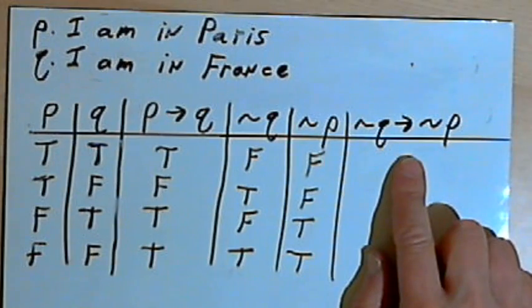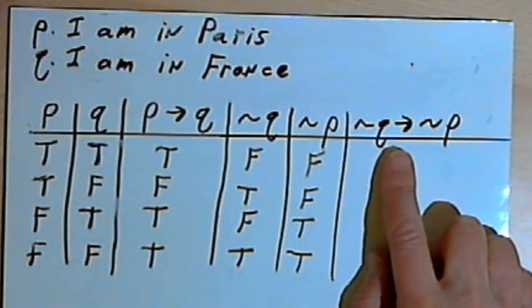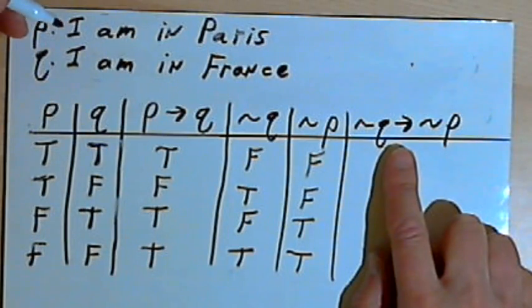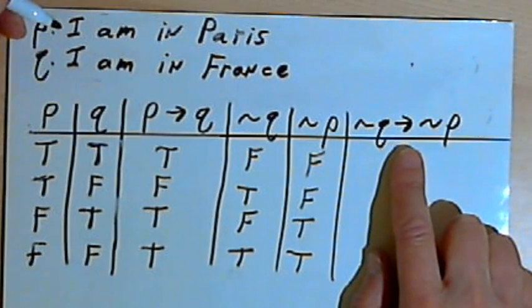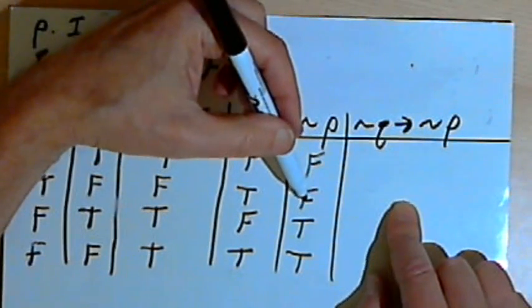And now I want to fill in the contrapositive column. If not Q, then not P. Well, you realize, since I've got an if and then, this is also a conditional statement. The only place this conditional statement is going to be false is when I start out with a true and follow that with a false.